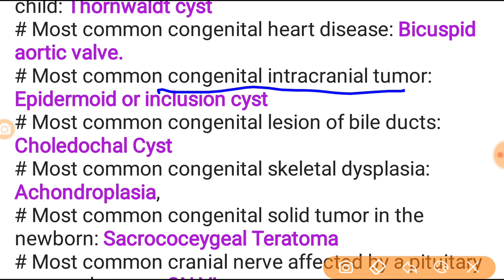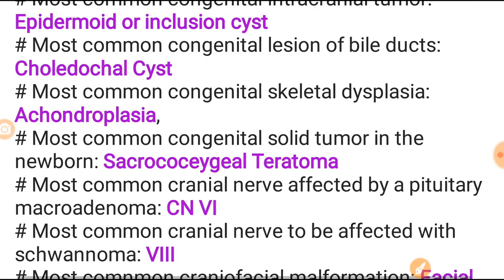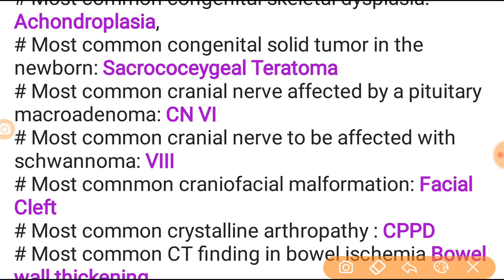Most common congenital intracranial tumor - note the word congenital - is the epidermoid or inclusion cyst. Most common congenital anomaly of the bile duct is choledochal cyst - very very important. Most common congenital skeletal dysplasia is achondroplasia. Most common congenital solid tumor in the neonate is sacrococcygeal teratoma - image-based questions on this are asked in NEET PG.